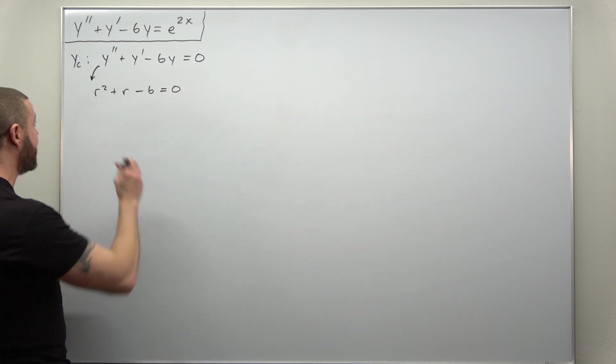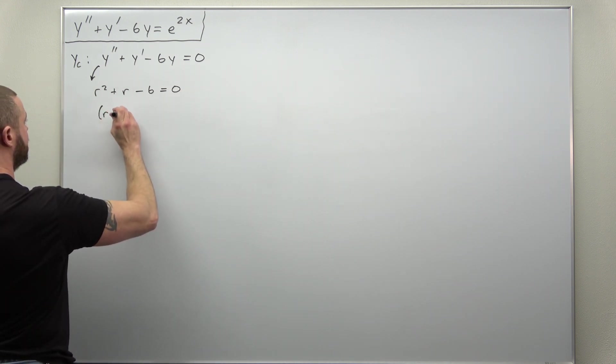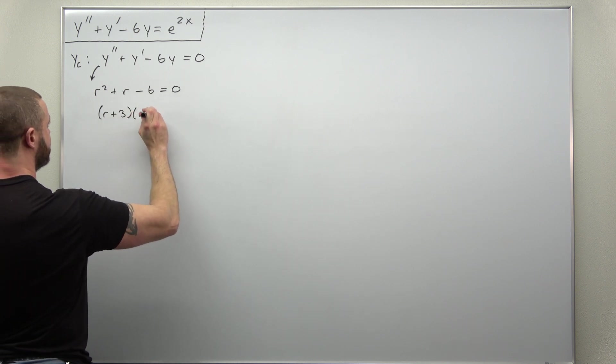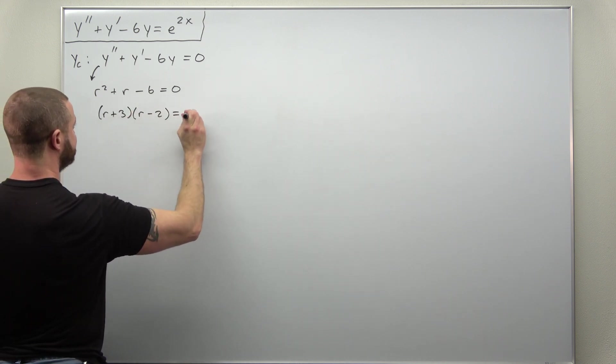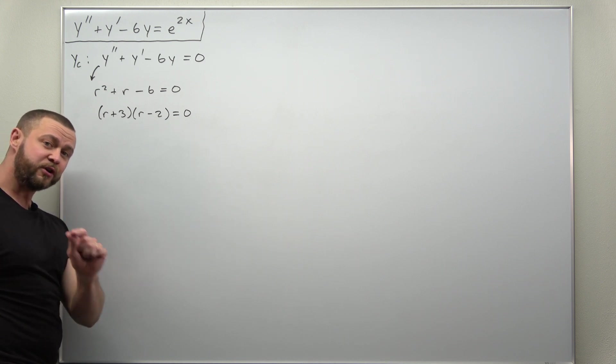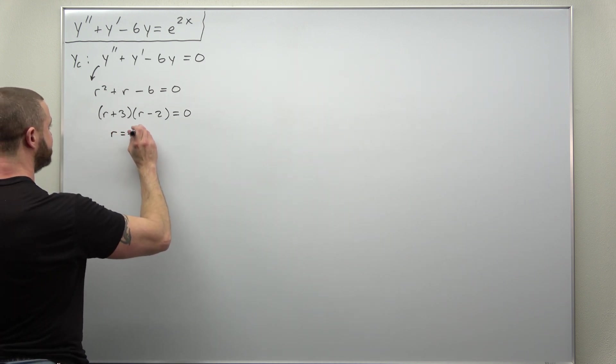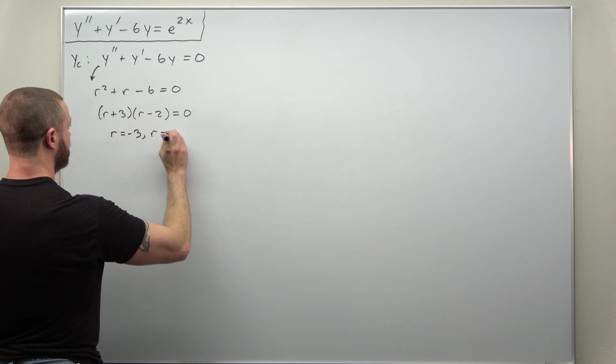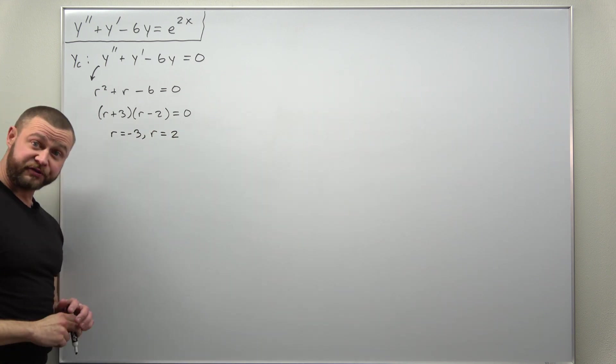And I believe we can factor that as (r + 3)(r - 2). And that gives us two real values. Looks like we get r = -3 and r = 2.